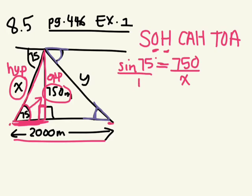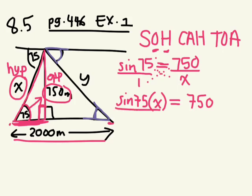Cross multiply, solve for x. Can we multiply sine 75 times x? Do we know what x is? No, so we're going to leave that there. 1 times 750. How do I isolate x? Divide by sine 75. We're trying to isolate x, so this cancels out. We need to divide the right side by sine 75. So what's x equal to?